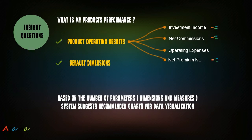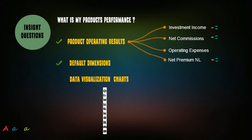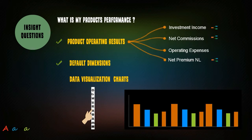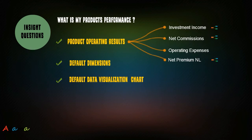The next step is to identify charts for data visualization. Based on the number of parameters — dimensions and measures — the system suggests recommended charts. Agama's visualization engine suggests the charts; you select the chart from the list and associate it to the question. The question 'What is my products performance?' is now ready for interactive exploration by end users.